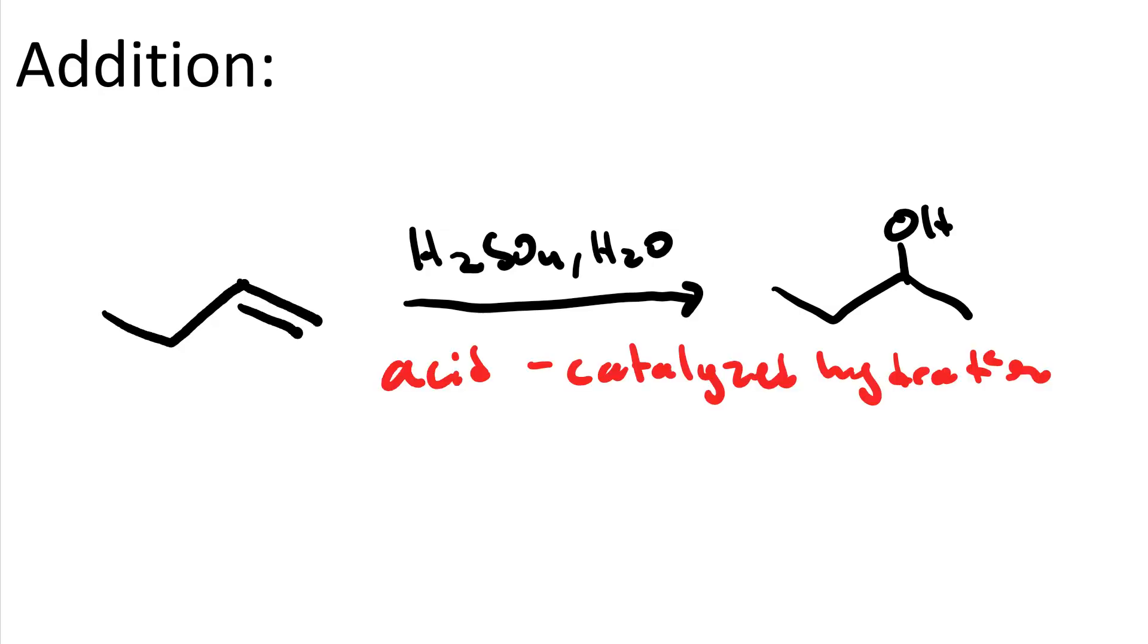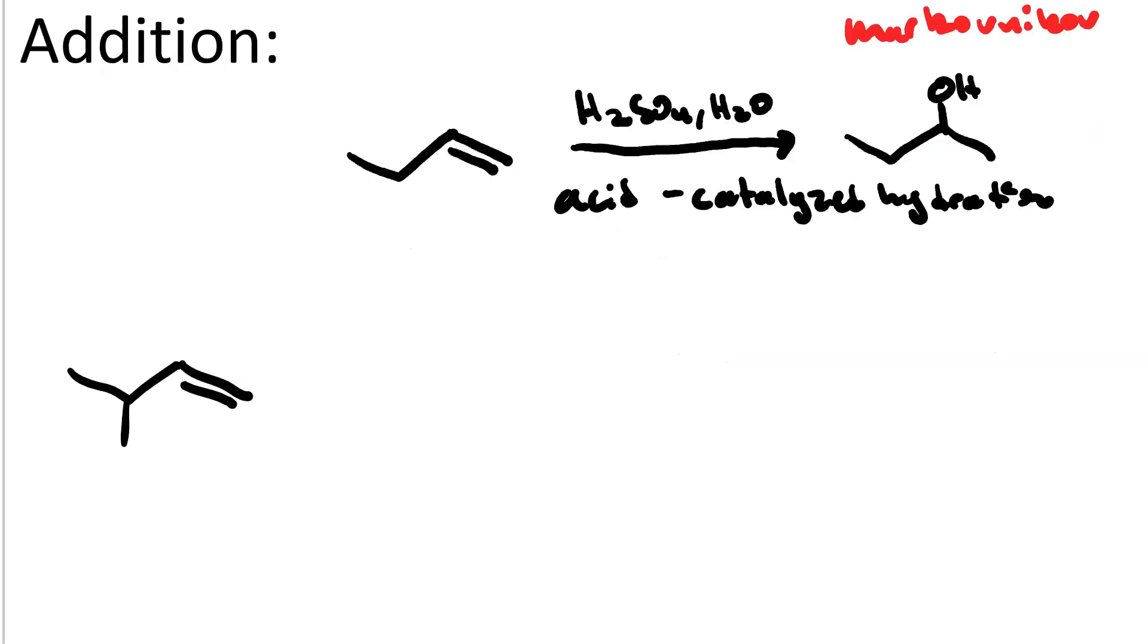So in addition to making alcohols, we've got several different ways we can do it. If we react an alkene with sulfuric acid in water, dilute sulfuric acid in water, that's acid-catalyzed hydration. The regiochemistry of the product is Markovnikov. If we did acid-catalyzed hydration of this alkene, we'd get a rearrangement product.